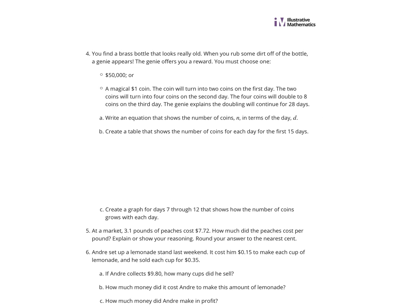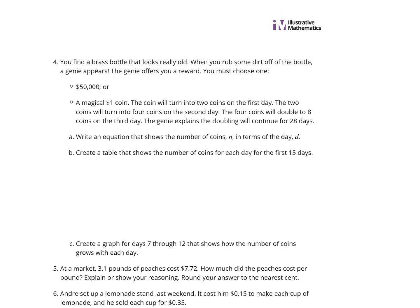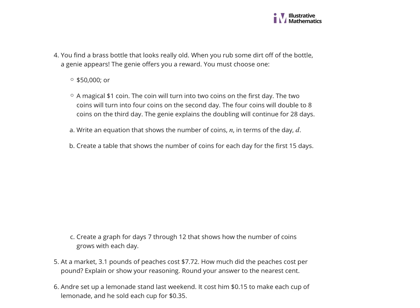You find a brass bottle that looks really old. When you rub some dirt off the bottle, a genie appears and offers you a reward. You must choose one: $50,000 or a magical $1 coin. This coin will turn into 2 coins on the first day, 4 coins on the second day, 4 coins will double to 8 coins on the third day. The genie explains the doubling will continue for 28 days. Write an equation that shows the number of coins, N, in terms of the day, D.